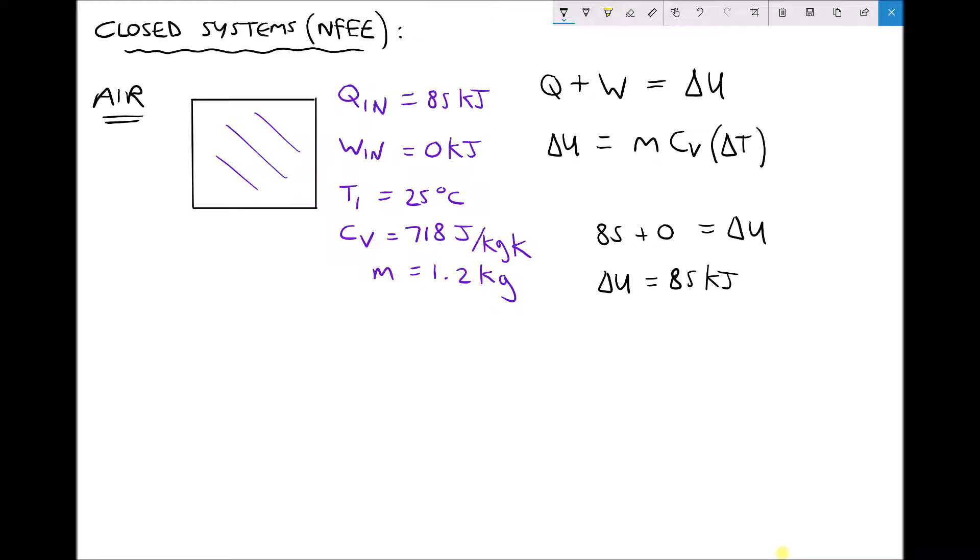What we can do next is use that solution to find the temperature of the air after it's been heated. We have delta U equals mass times specific heat capacity at constant volume times the change in temperature. The change in temperature is T2, the temperature after heating, minus T1.